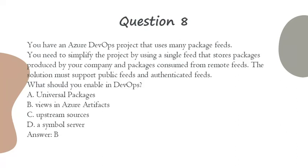Question 8. You have an Azure DevOps project that uses many package feeds. You need to simplify the project by using a single feed that stores packages produced by your company and packages consumed from remote feeds. The solution must support public feeds and authenticated feeds. What should you enable in DevOps? A. Universal packages. B. Views in Azure Artifacts. C. Upstream sources. D. A symbol server. Answer: C.